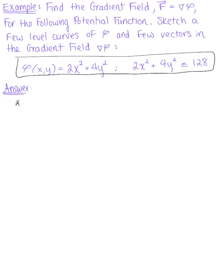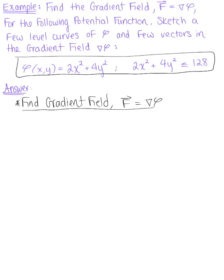The first thing we need to do is find the gradient field. We know our gradient field is the vector F defined by the gradient of the potential function, ∇φ. We need the partial derivative of φ with respect to x, as well as with respect to y. Taking the partial derivative with respect to x gives us 4x, and the partial derivative with respect to y gives us 8y.